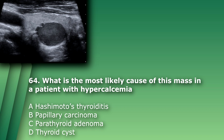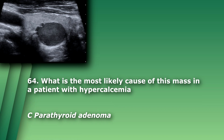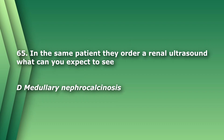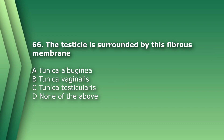Question 64: What is the most likely cause of this mass in a patient with hypercalcemia? A) Hashimoto's thyroiditis, B) papillary carcinoma, C) parathyroid adenoma, D) thyroid cyst. The answer is C, parathyroid adenoma, which can cause hypercalcemia. Question 65: In the same patient a renal ultrasound is ordered — what can you expect to see? A) renal hematoma, B) angiomyolipoma, C) glomerulonephritis, D) medullary nephrocalcinosis. The answer is D, medullary nephrocalcinosis, which can be caused by hypercalcemia.